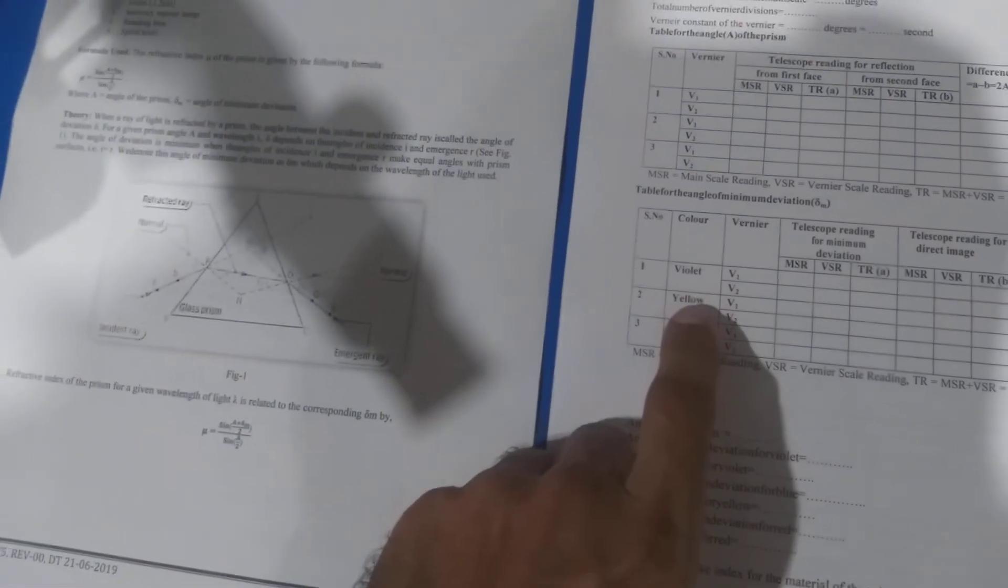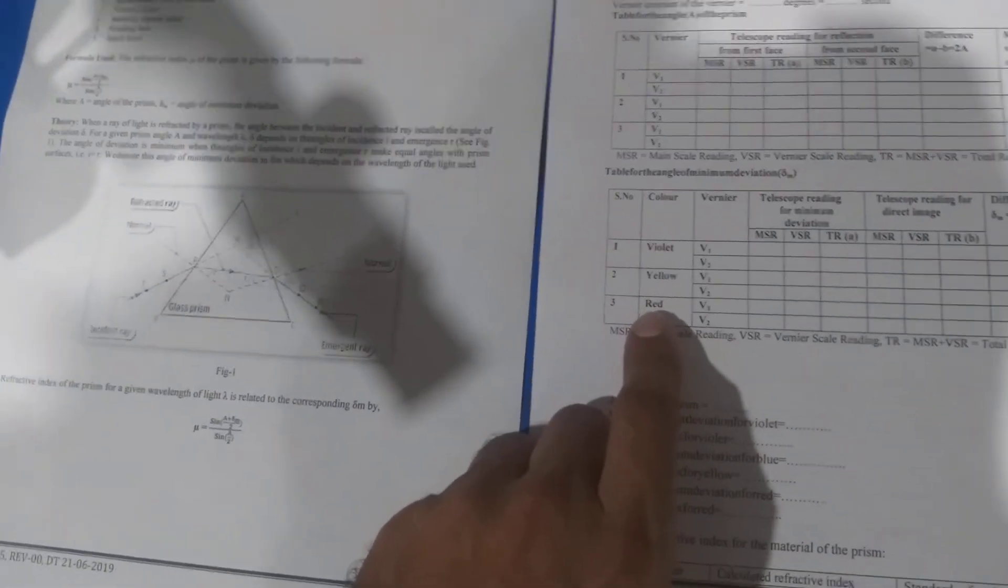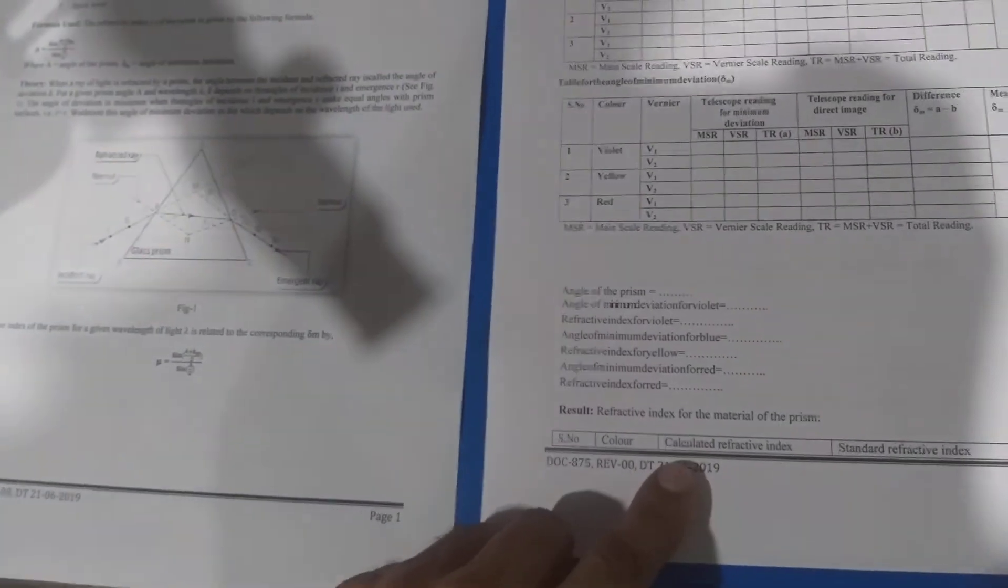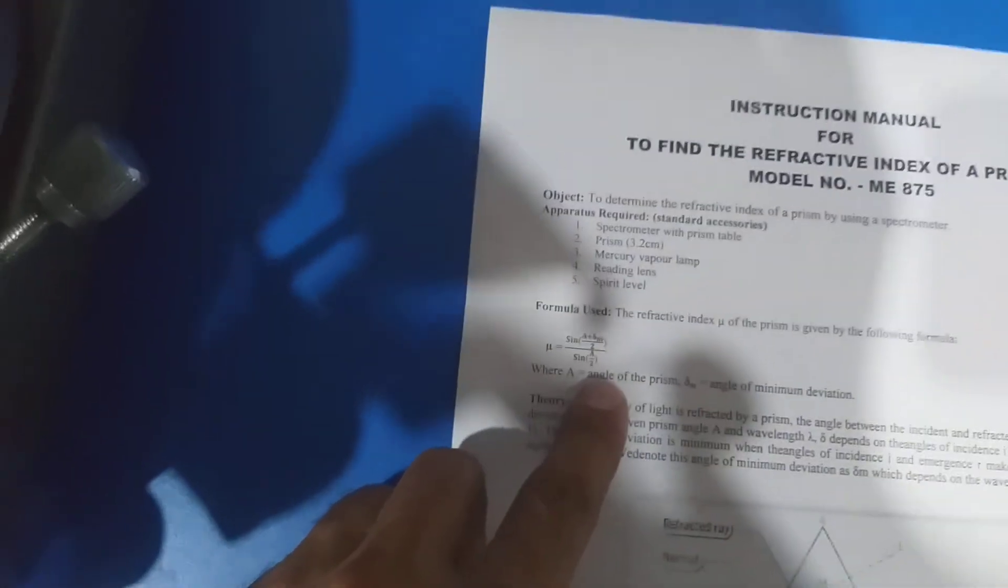If we are performing this experiment with white light, we can calculate the value of minimum deviation for violet color, yellow color, and red color. By using the formula we can calculate the refractive index of the prism.